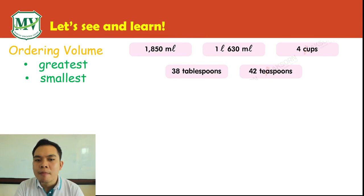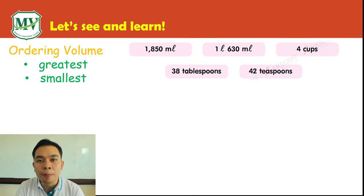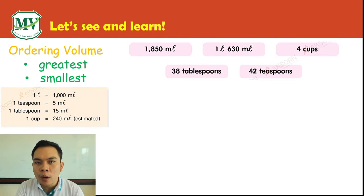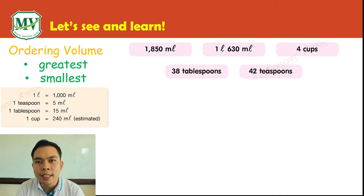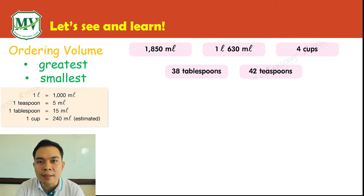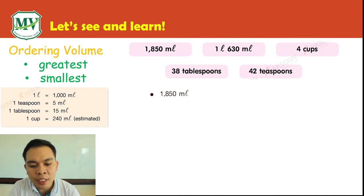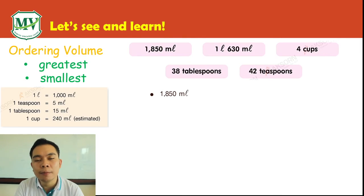The first step is to convert different units of volumes and then compare them. We need to convert everything into milliliters. Remember: 1 liter equals 1000 milliliters, 1 teaspoon equals 5 milliliters, and 1 tablespoon equals 15 milliliters.